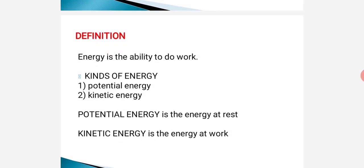Previously, we have learned what energy is — the ability to do work. Work is not just going out and coming in as we know, but it extends to all the activities that aid life. We have the two major kinds of energy: potential energy and kinetic energy. Potential energy is the energy at rest, while kinetic energy is the energy at work.